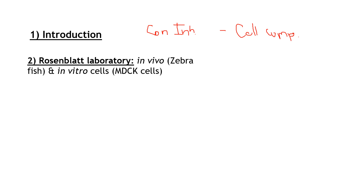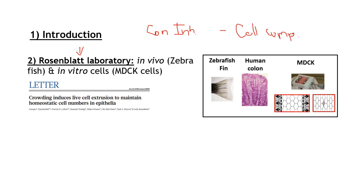Those lines of evidence were shown by the Rosenblatt lab in 2013, who published a very important article demonstrating that zebrafish, humans, and in vitro canine kidney cells — MDCK cells — show that when a tissue has too many cells, mechanical tension causes those cells to die. They are extruded and then they die.